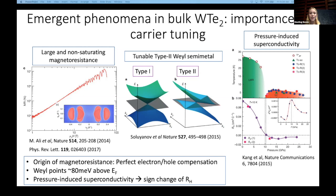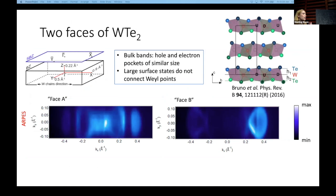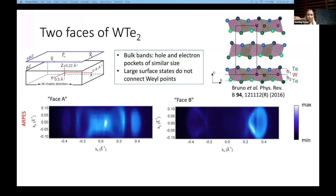Moving on to the ARPES data — there is one important complication in the ARPES spectra of this material that actually helps us narrow down the explanation of what we ultimately see with potassium dosing. It was reported by the Baumberger group a few years ago that this material actually has two non-equivalent cleaved surfaces, which we call phase A and phase B. So if you have one sample, cleave it, flip it over, and cleave it, you're going to get different spectra. This is attributed to a very subtle inversion symmetry breaking along the c-axis, where in one tungsten ditelluride block the tungsten layer has tellurium atoms above and below with slightly different average heights.